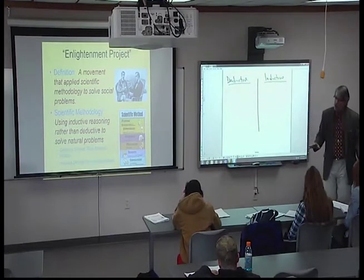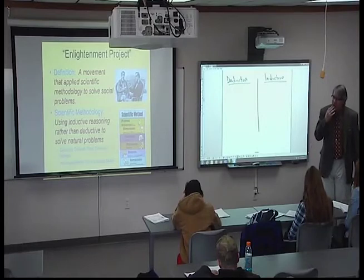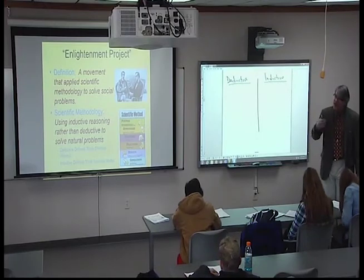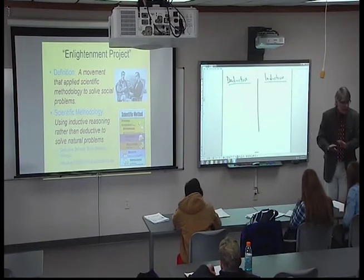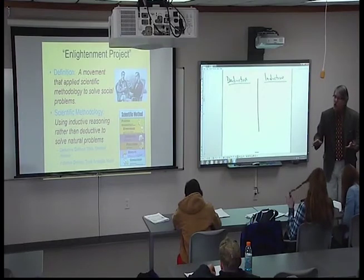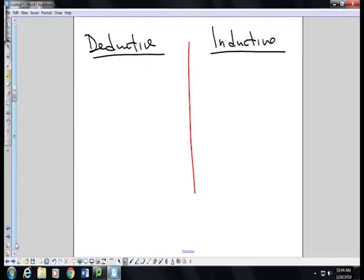I hesitate to do this because I know you guys are going to screw this up, but it's a nice way of understanding it in our modern language. Just realize that when I'm talking about this in the 1400s, 1500s, 1600s, 1700s, this doesn't apply. But in our modern language, you'll understand. Deductive reasoning is what we use when we are reasoning with faith. Inductive reasoning is what we use when we are reasoning in science.